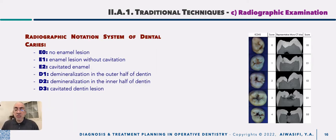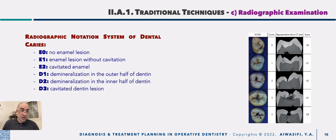To standardize interpretation of radiographs, a radiographic notation system has been developed specifically for dental caries, with three levels in enamel and three levels in dentine. Starting from E0 — no obvious enamel lesion — through E1, enamel lesion without cavitation, and E2, cavitated enamel. Then dentine levels: D1, demineralization in the outer half of dentine; D2, demineralization in the inner half of dentine; and D3, cavitated dentine lesion.